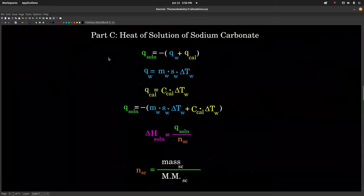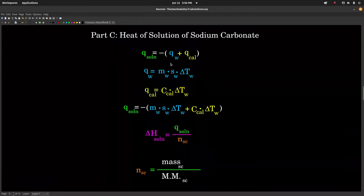Part C: heat of solution of sodium carbonate — exactly the same procedure. The only thing that changes is instead of magnesium nitrate hexahydrate, we're dissolving sodium carbonate. The only difference in the calculation is we use the moles of sodium carbonate, which we get by taking the mass of sodium carbonate and dividing by its molar mass.